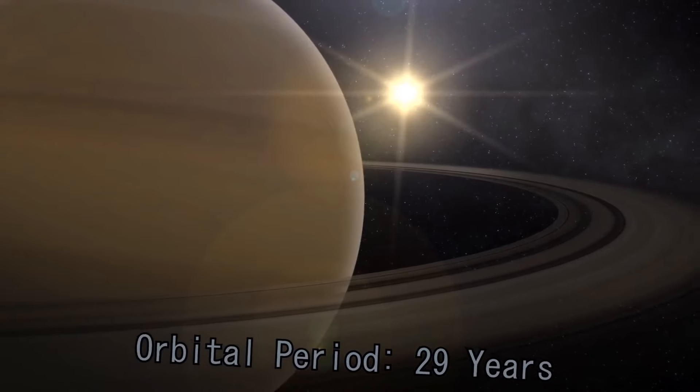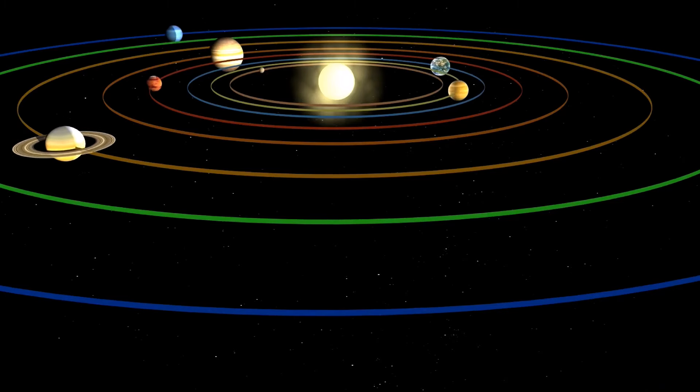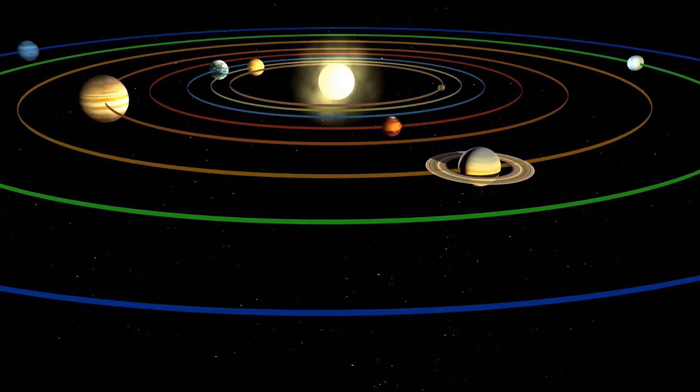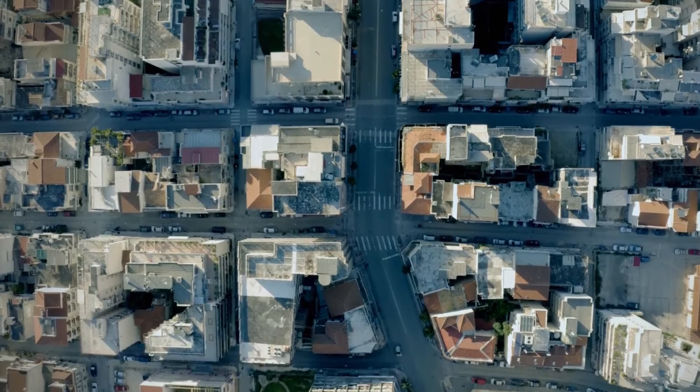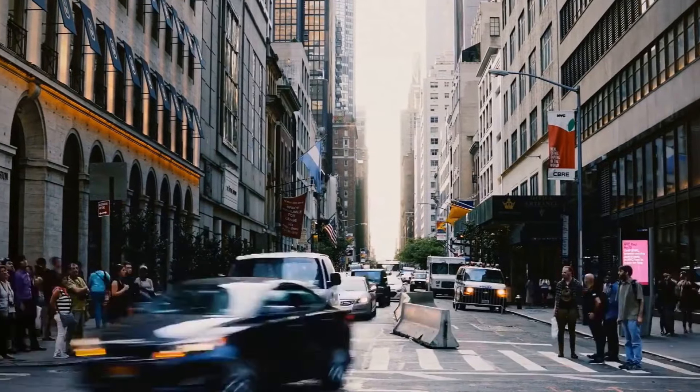For comparison, Saturn needs 29 Earth years to travel around the Sun, while Uranus needs 84 years to complete the course. Again, it's one of the planets that have been speculated to support life.